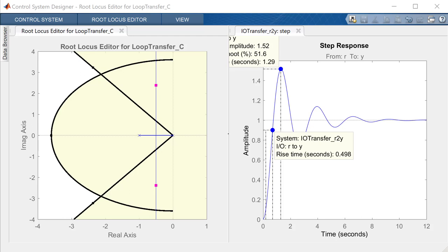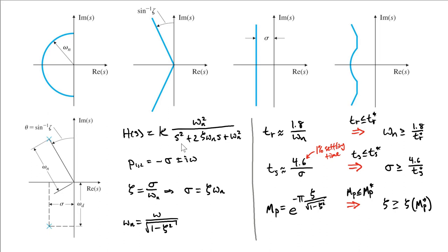Some of you may be curious why the closed loop poles that achieve the rise time objective are not exactly on the boundary computed from the time domain specs. One reason is that those formulas assume a second-order transfer function — and in particular, may include a term in the numerator that we don't necessarily have here. So the time domain specs won't match exactly; we use them directionally, knowing that pushing closed loop poles further from the origin should decrease rise time. These are approximations based on second-order systems.